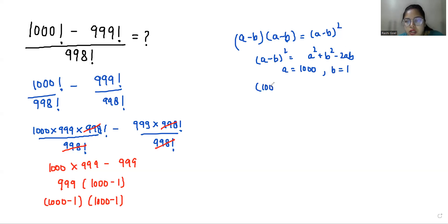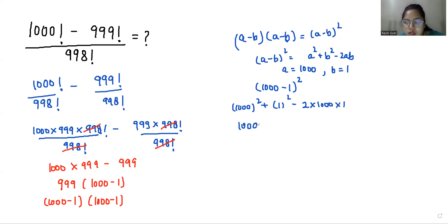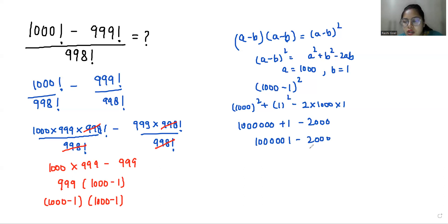So (1000 minus 1) whole square equals 1000 squared plus 1 minus 2 times 1000 times 1, which gives us 998,001. That is our final answer.